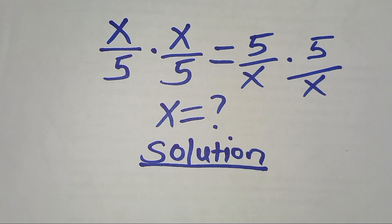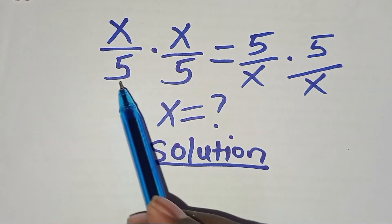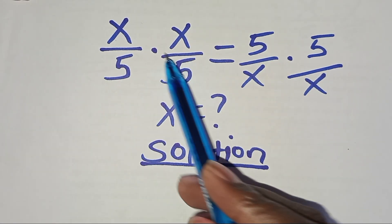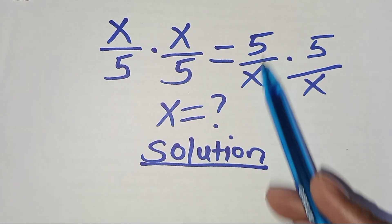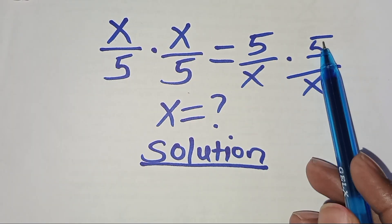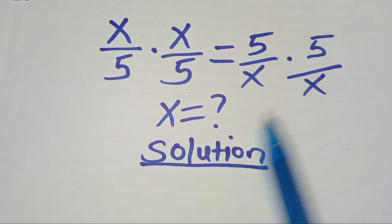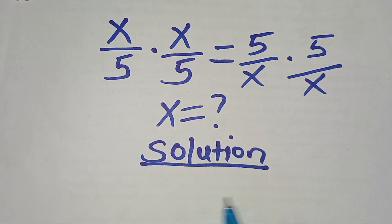Welcome. Today we'll provide a solution to this math problem: x over 5 times x over 5, which is equal to 5 over x multiplied by 5 over x. We need to find the value of x.